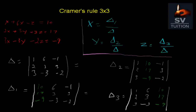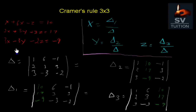The X value will be delta 1 divided by delta. Y's value will be delta 2 divided by delta, and delta 3 divided by delta is the value of Z. We have given the equation and we just calculate the value of delta.